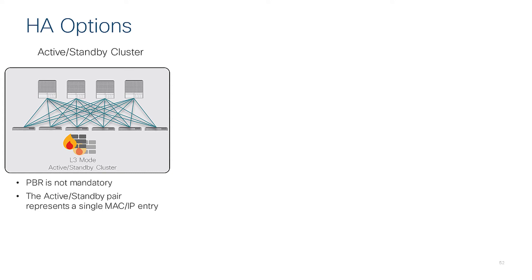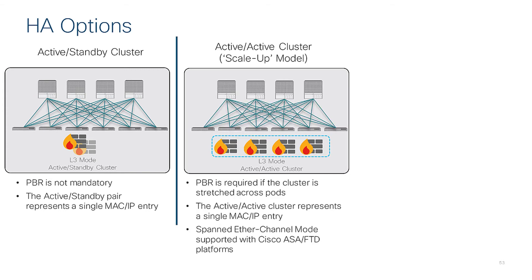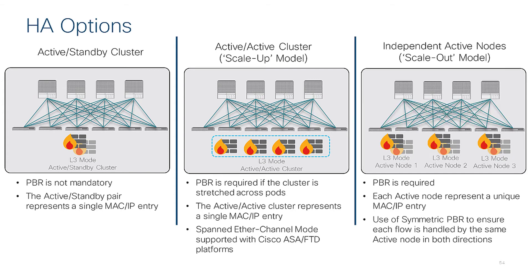In terms of high availability options, the classic option is active-standby mode, which doesn't require any service graph redirect. More advanced options require service graph redirect — like active-active or active-cluster, where you can have firewalls active in different data centers simultaneously. This is called the span-interchassis mode, which works with ASA and FTD platforms. You can also do a cluster of active-standby devices, where each active node is a single IP/MAC entry that can fail over. ACI provides symmetric hashing to send traffic to the same nodes in both directions.